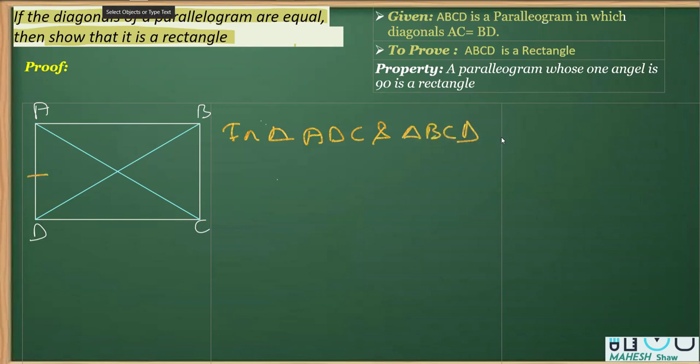I can write AD is equal to BC, and this is because these are the opposite sides. Opposite sides of a parallelogram are equal.